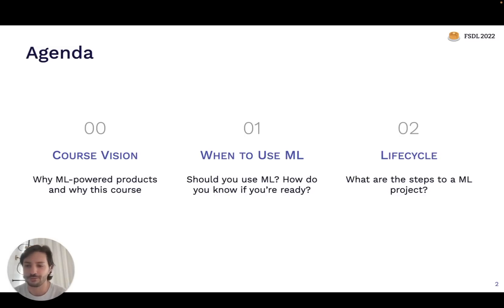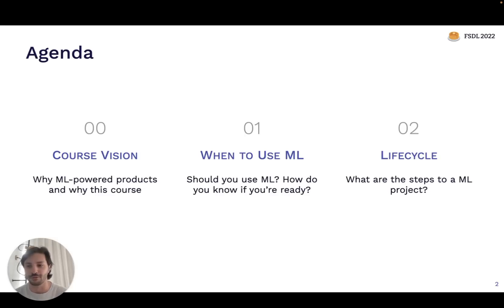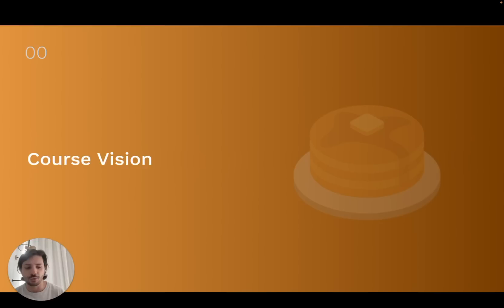Today we're going to cover a few things. First, we'll talk about why this course exists and what you might hope to take away from it. Then we'll talk about the first question you should ask when starting a new ML project: should we be using ML for this at all? And then we'll talk through the high-level overview of what the lifecycle of a typical ML project might look like, which will also give you a conceptual outline for some of the things we'll talk about in this class.